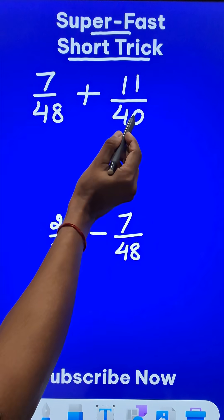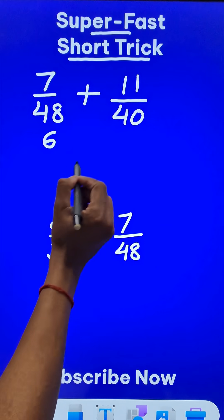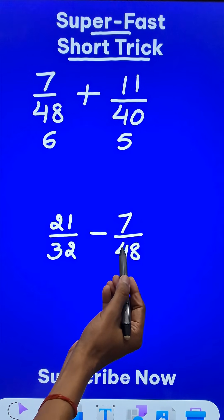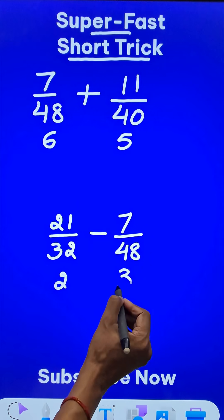The highest common factor of 40 and 48 is 8. So 8 times 6 is 48 and 8 times 5 is 40. Likewise, 32 and 48, they go into 16. So 16 times 2 is 32 and 16 times 3 is 48.